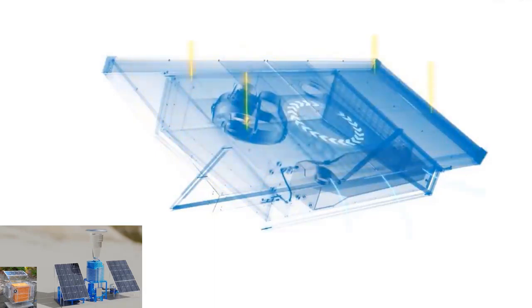Solar-powered atmospheric water generators offer a sustainable and cost-effective solution to address water scarcity. By utilizing solar energy, these devices can extract moisture from the air and convert it into potable water, reducing reliance on traditional water sources.